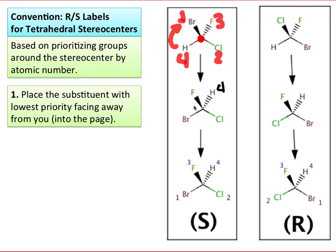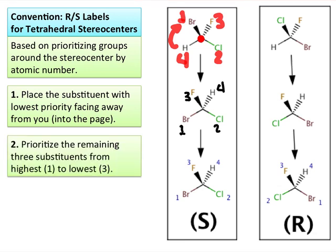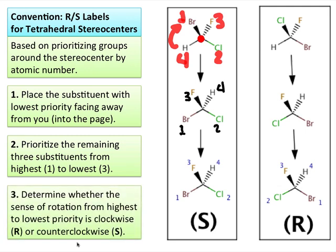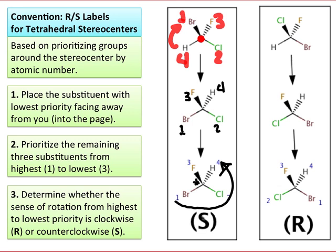The priorities are one for the bromine, two for the chlorine, and three for the fluorine. After making that prioritization, we look at the direction of rotation from highest to lowest priority and ask: is that clockwise or counterclockwise? If it's counterclockwise, as it is on the left, we designate the stereocenter as possessing the S configuration. On the other hand, if the direction of rotation is clockwise, as it is in the right-hand case, then we designate the stereocenter the R configuration. I like to remember this as R going to the right on top and S going to the left on top.